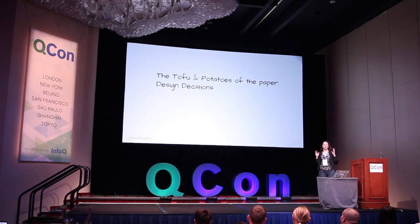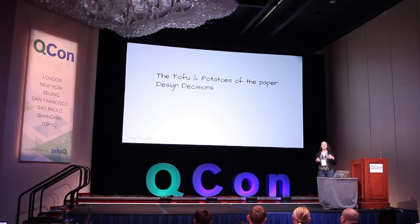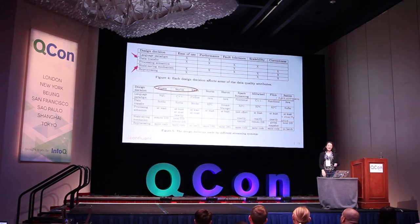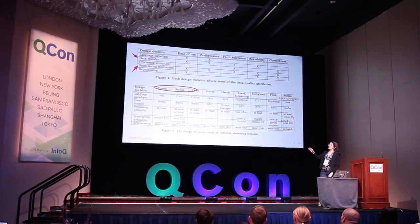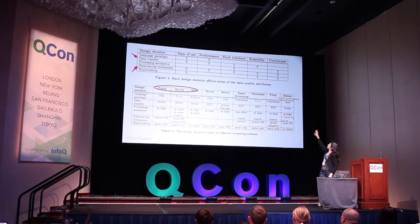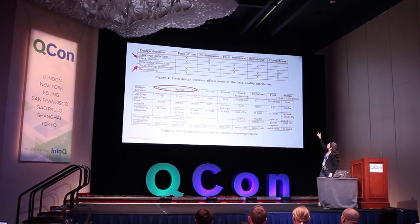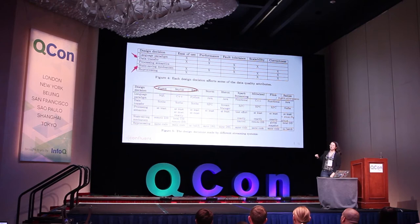And then after we explain the context, we get into the tofu and potatoes of this entire discussion. What were the design decisions that we had to make? And they started with summarizing everything in very handy tables. And they say that, hey, there is things that we care about in the system, which is ease of use, performance, fault tolerance, scalability, correctness.